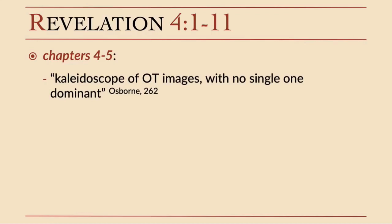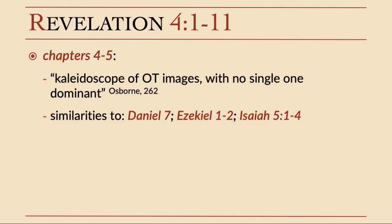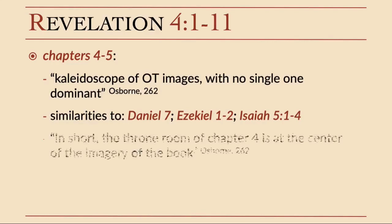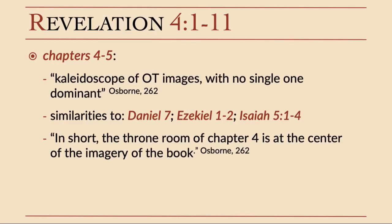Osborne, in his book on Revelation, says chapters 4 and 5 are a kaleidoscope of Old Testament images with no single one dominant. As you go through these chapters, there are tons of things coming out of the Old Testament. There are similarities to Daniel chapter 7, Ezekiel chapters 1 and 2, and Isaiah chapter 5, verses 1 through 4. Osborne says the throne room of chapter 4 is at the center of the imagery of the book, so chapter 4 is pretty important.